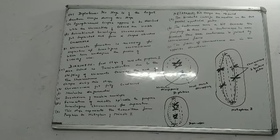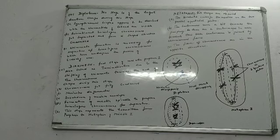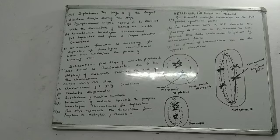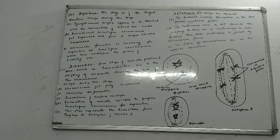So in meiosis I we have done prophase I and metaphase I. We are also doing more things in meiosis I — that is anaphase I and telophase I. After we complete anaphase I and telophase I, we will move on to meiosis II. This is all about meiosis I: diprotein and diakinesis, the last two stages of prophase I, and metaphase I. In the next video we will be taking up anaphase I and telophase I of meiosis I. Thank you.